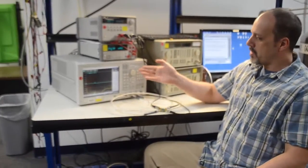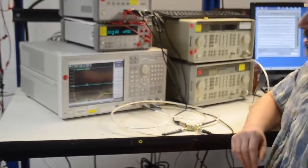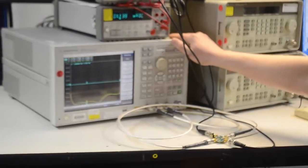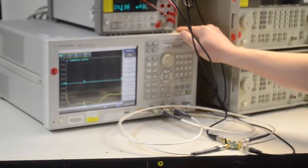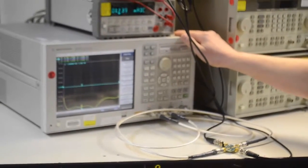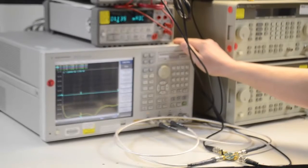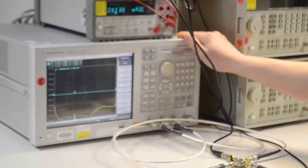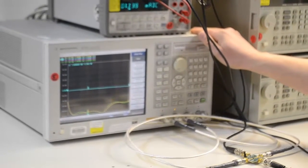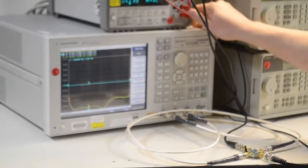If we turn our attention to the vector network analyzer here, you can see in our insertion loss mode, we have a very low insertion loss of about 1.4 dB at 2 gigahertz, and it gently slopes to about 2.5 dB at 6 gigahertz, so very low insertion loss.